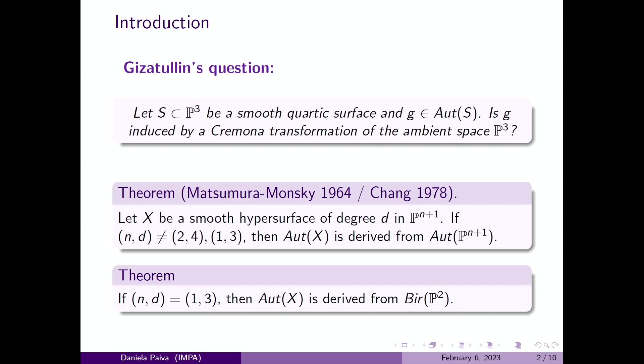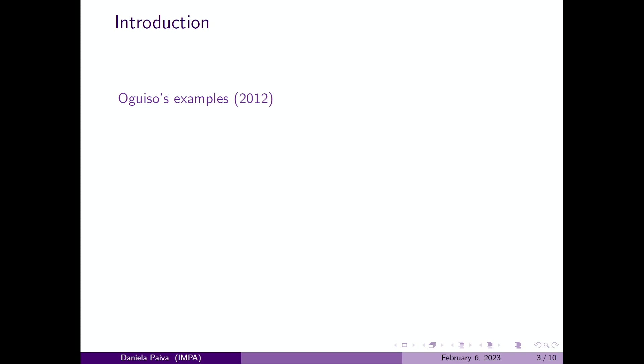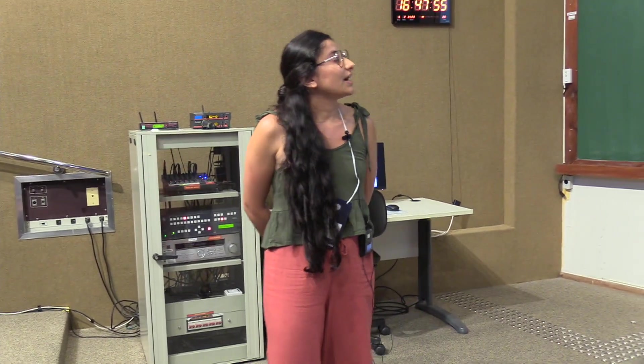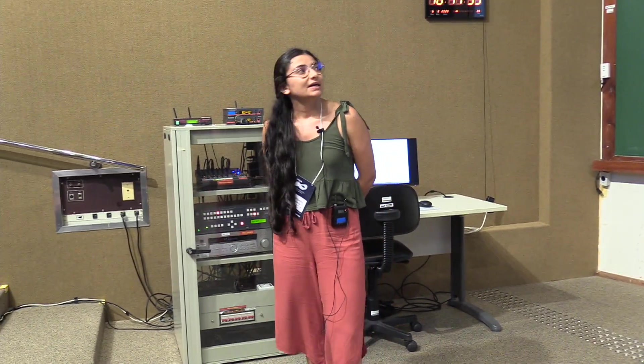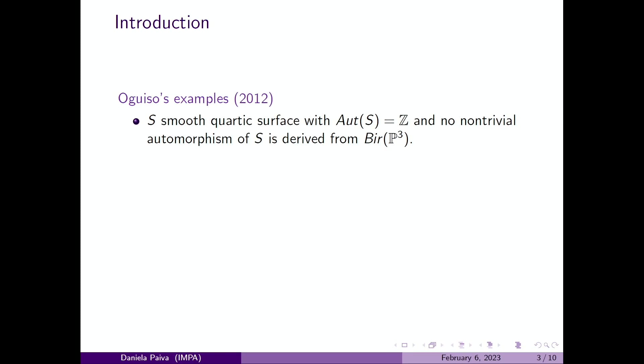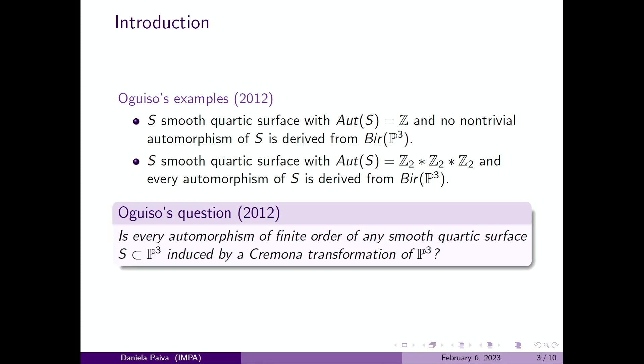So Gizatullin's question was first addressed by Ogizo when he constructed some examples to answer this question. He constructs a smooth quartic surface where the automorphism group is ℤ and a non-trivial automorphism is induced by a Cremona transformation of P³. On the other hand, he constructs a smooth quartic surface in P³ where the automorphism group is this free product here, but in this case every automorphism of the surface is induced by Cremona transformation. So we can see that for quartic surfaces there are different behaviors.